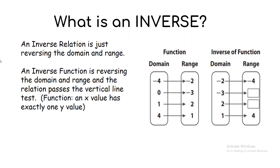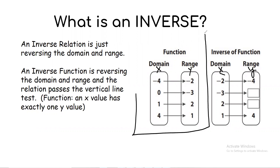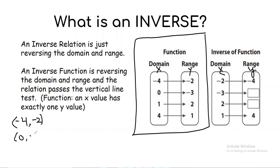Here's an example. The domain is x and the range is y. In the original function: negative four leads to negative two, zero leads to negative three, one leads to two, and four leads to one. Written as coordinates: (−4, −2), (0, −3), (1, 2), (4, 1).